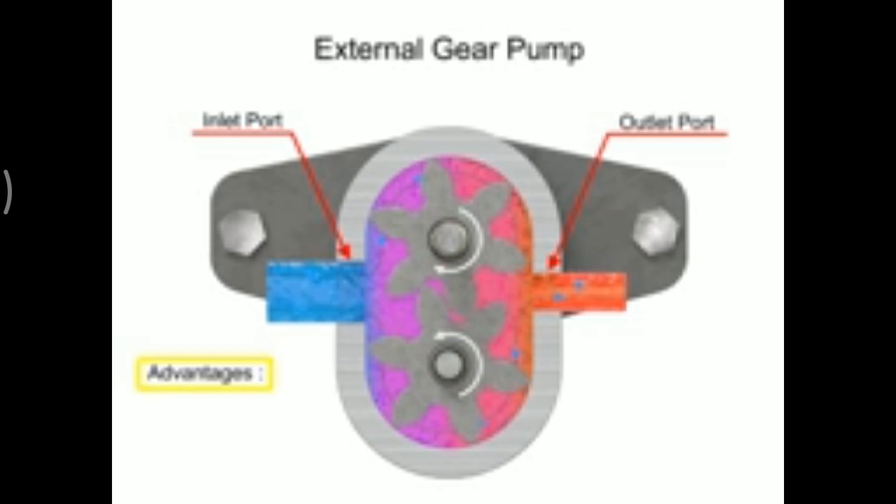The advantages of external gear pumps are their high speed and pressure, relatively quiet operation, and that their design accommodates a wide variety of materials. Disadvantages include bushings in the liquid area can become worn and that they have fixed-end clearances.